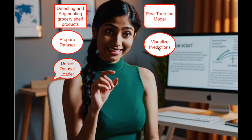Step 5: Visualize predictions. Visualization functions are implemented to evaluate model predictions by overlaying bounding boxes, confidence scores, and segmentation masks on the input images. Images are transformed back to their original format for display, and bounding boxes are drawn with labels indicating confidence scores. Masks are applied as overlays with adjustable transparency to highlight detected objects. These visualizations help assess prediction accuracy and identify potential improvements. By analyzing outputs on validation images, the team can debug issues and fine-tune the model to achieve better results.